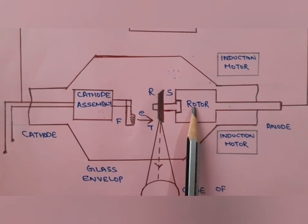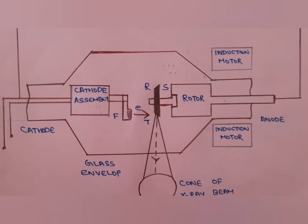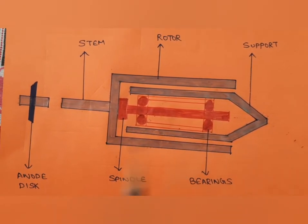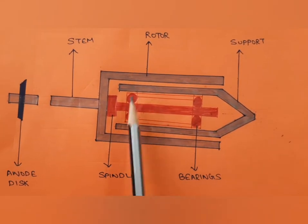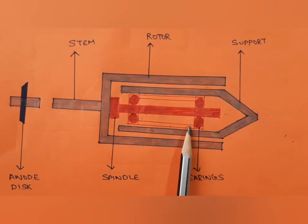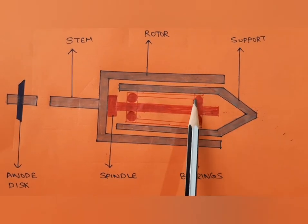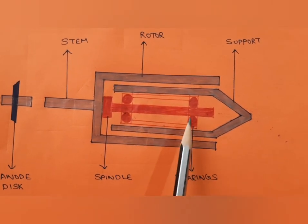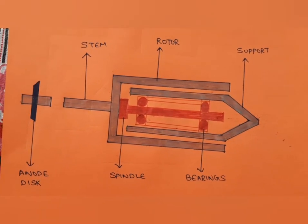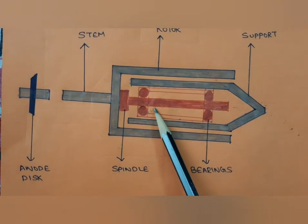The rotor consists of copper bars arranged around a cylindrical iron core. In the inner view of the anode assembly, you can see the anode disc, the anode stem, and the inside of the rotor with bearings that help the rotor spin. These bearings are steel balls that must be placed in an extremely high vacuum condition.